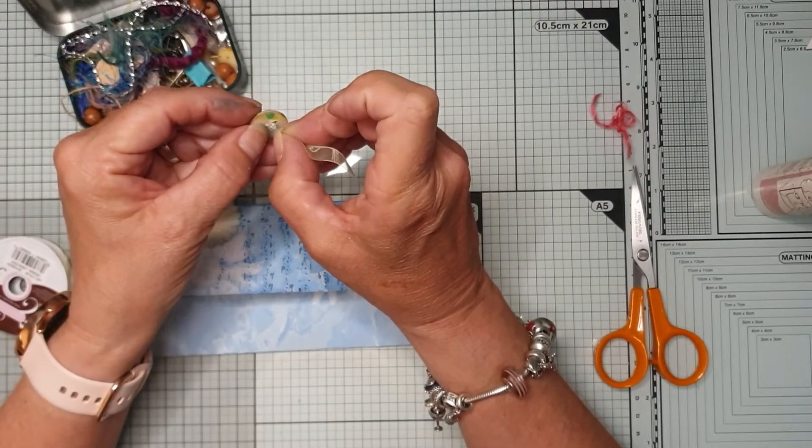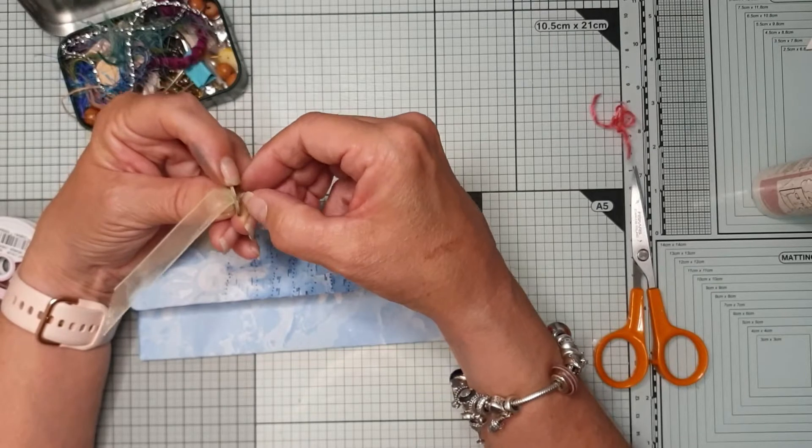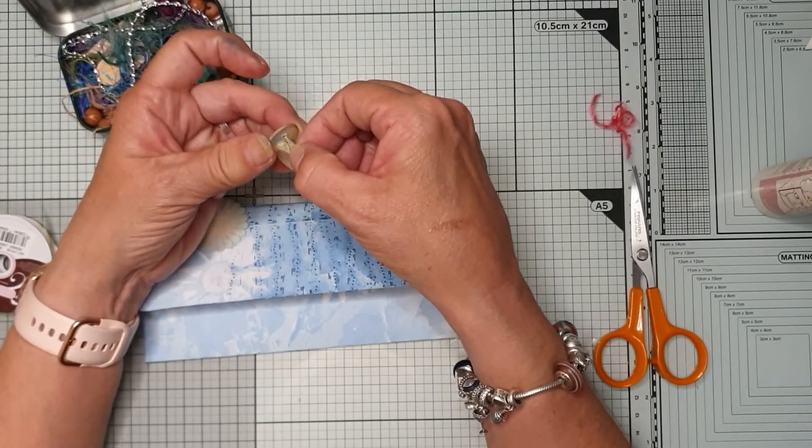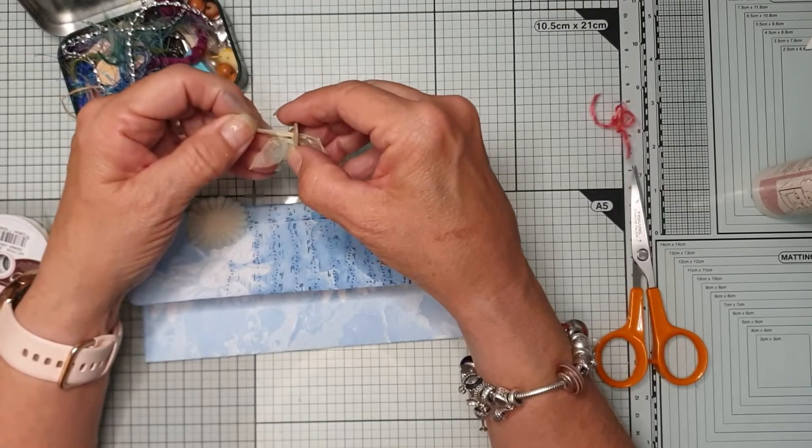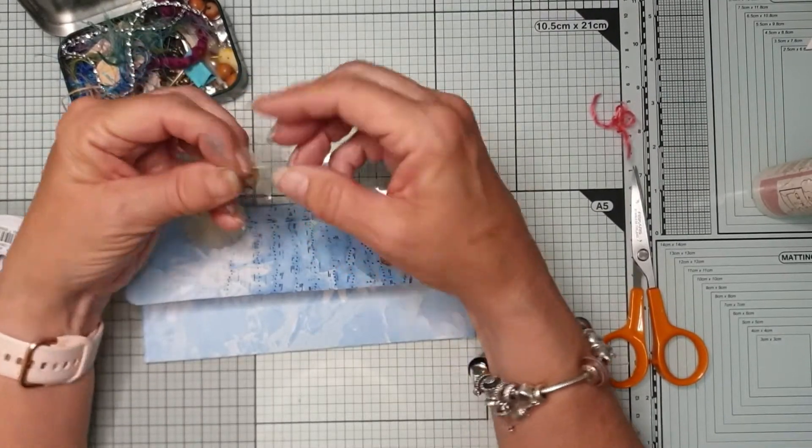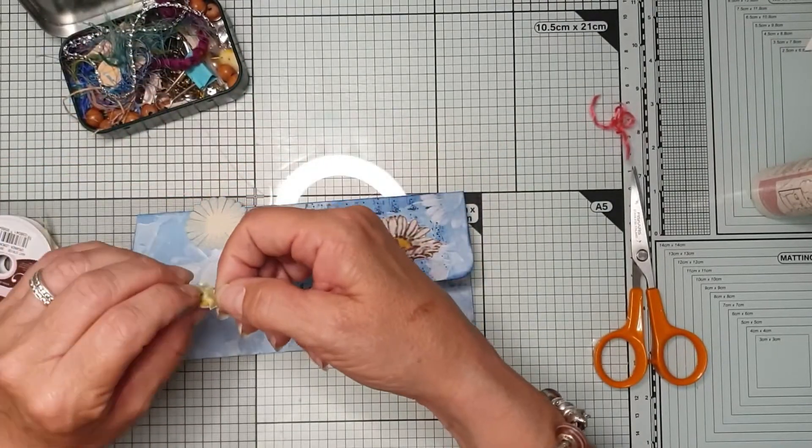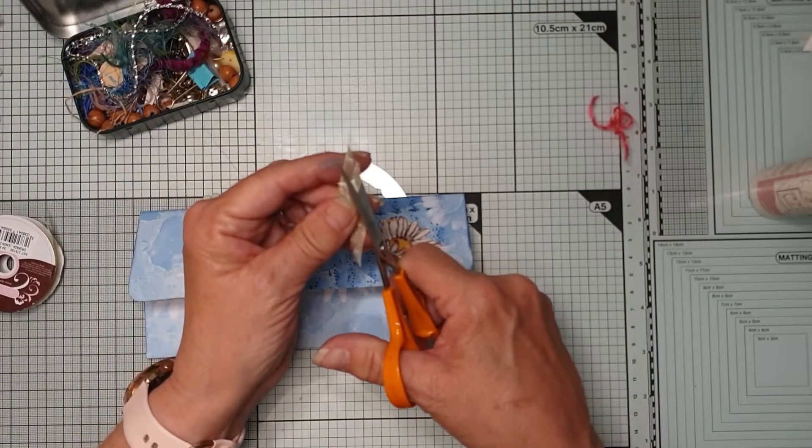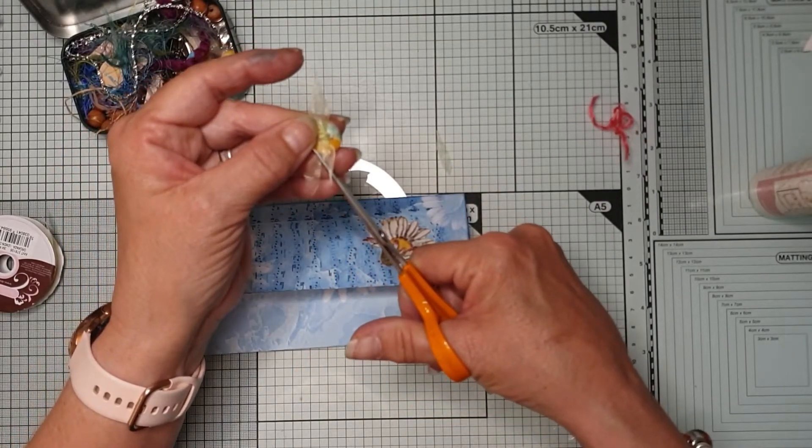Right. Goes through that way. One through that way. There we are. And I'll tie that in a knot. It's just lemon organza ribbon. And I'll just trim that. Trim that.